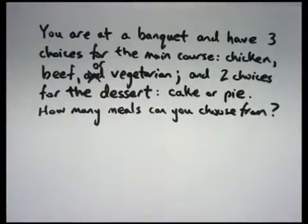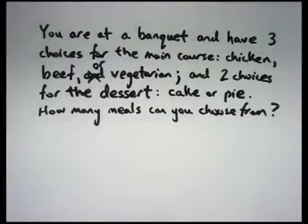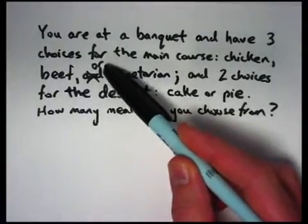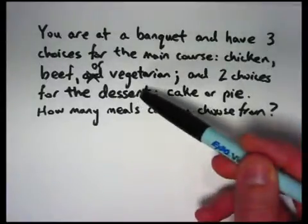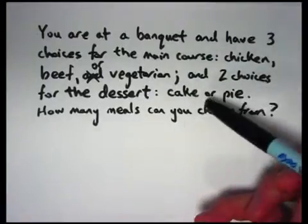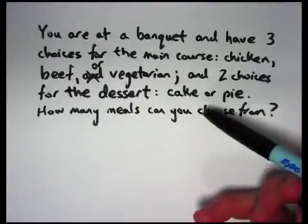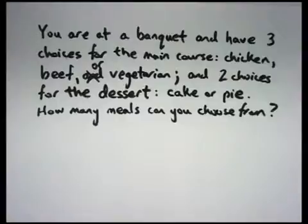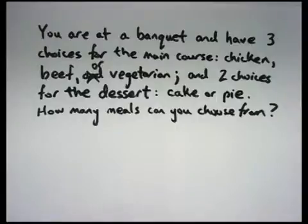You should realize when you first think about a problem like this that there are some implicit assumptions that you have to realize are there. One of them is exemplified by the fact that I did change this 'and' or 'you'. With your main course, you're going to choose chicken, beef, or vegetarian. One of those three and not more than one. And with your dessert, you're going to choose one of these two, cake or pie, one or the other, but not both. Another implicit assumption is you are going to have a main course and you are going to have a dessert. You're not going to have just the main course and skip the dessert. You're not going to have just the dessert and skip the main course. Those are some implicit, unstated assumptions in this problem that you should get in the habit of realizing are often there in math problems.